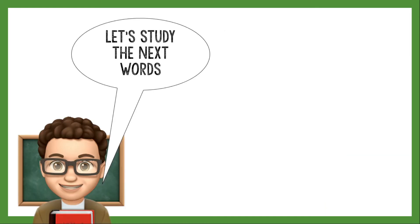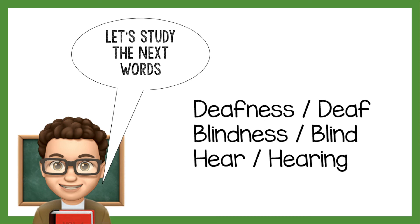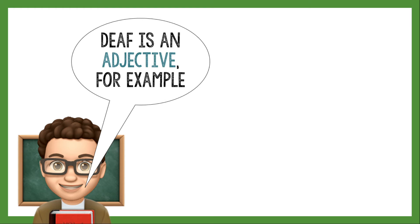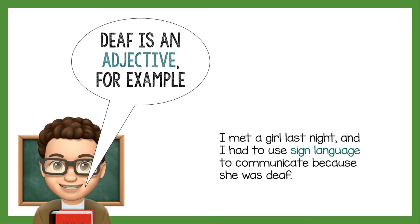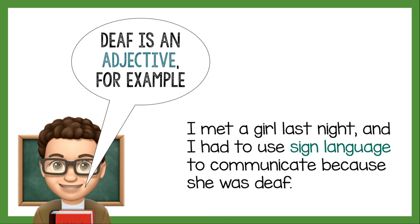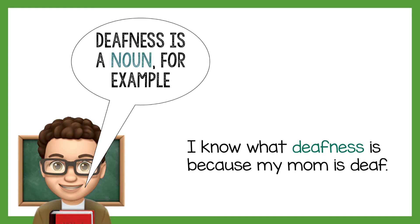Let's study the next words: deafness and deaf. Deaf is an adjective. For example: 'I met a girl last night and I had to use sign language to communicate because she was deaf.' Deafness is a noun. For example: 'I know what deafness is because my mom is deaf.'